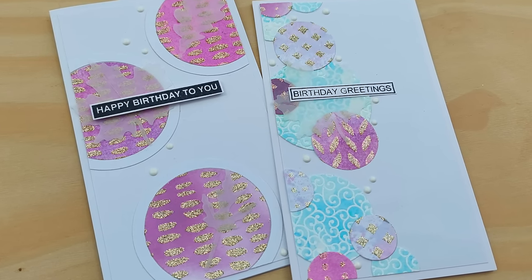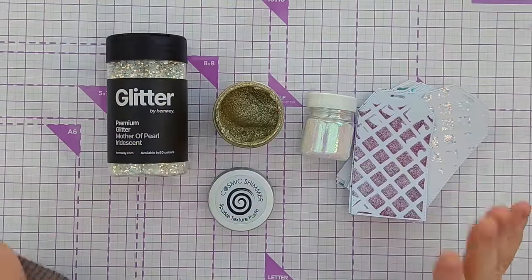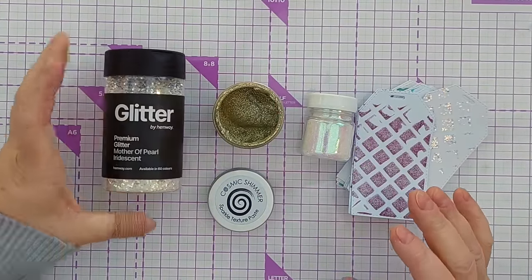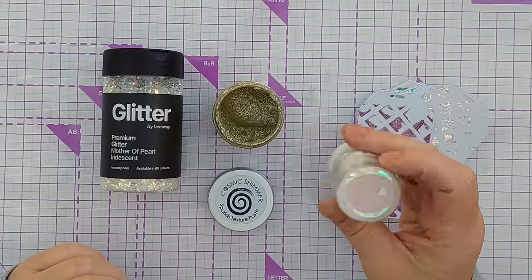Then I thought, I've got glitter—chunky glitter, this iridescent chunky glitter, and really fine glitter. I wonder if I can make some texture paste of my own.